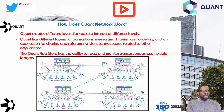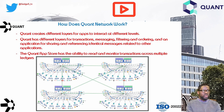So how does Quant Network work? Quant creates different layers for apps to interact at different levels — layers for transactions, messaging, filtering, and ordering — and an application for sharing and referencing identical messages related to other applications. The Quant App Store provides the ability to read and monitor transactions across multiple ledgers. Using Overledger, developers write smart contracts across a wide variety of chains, including those that don't support them, such as Bitcoin.